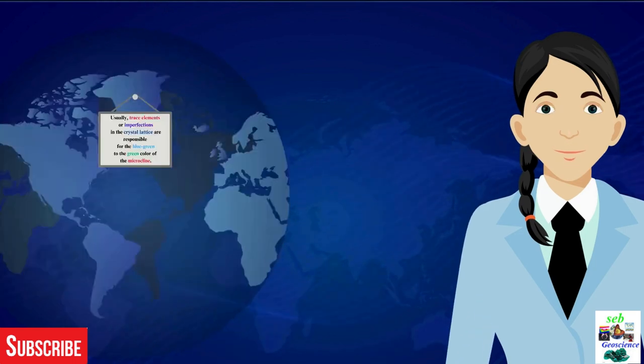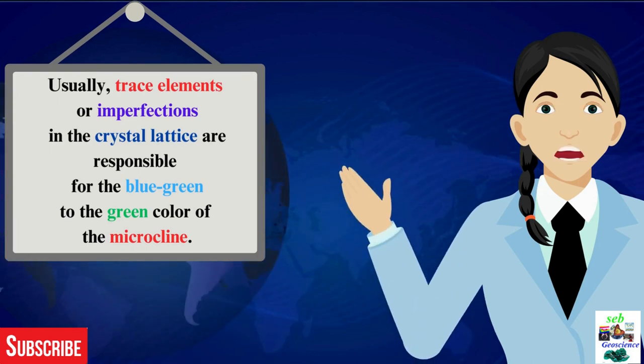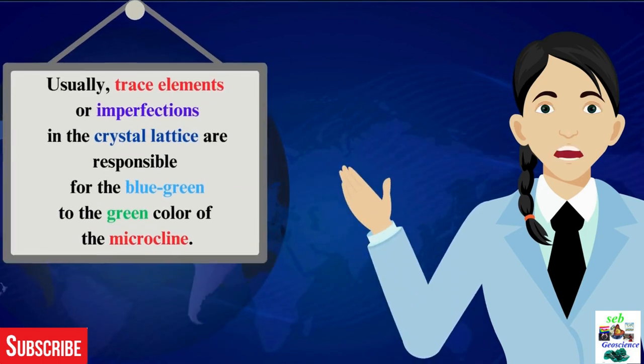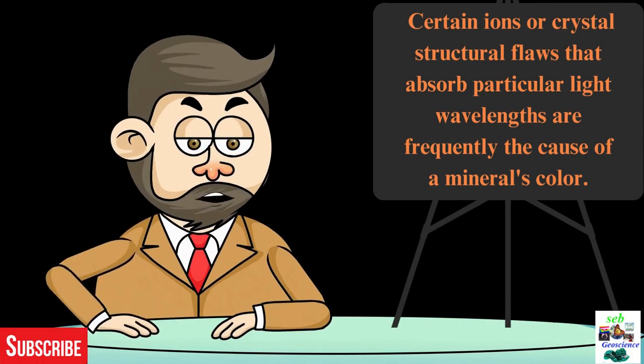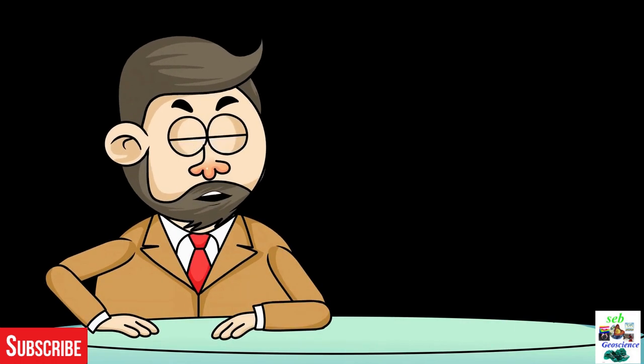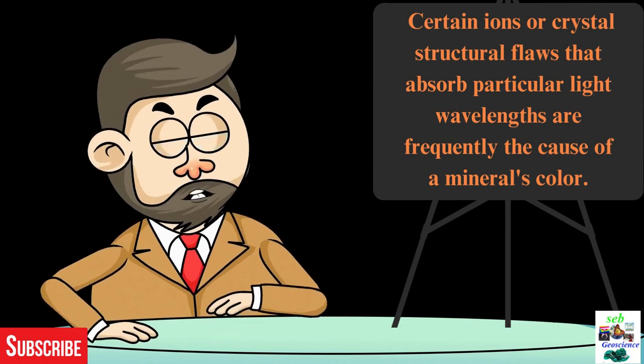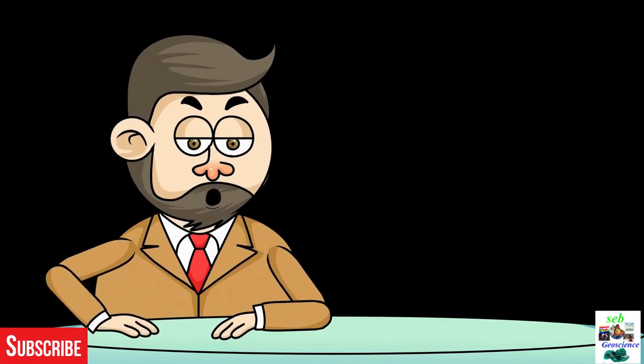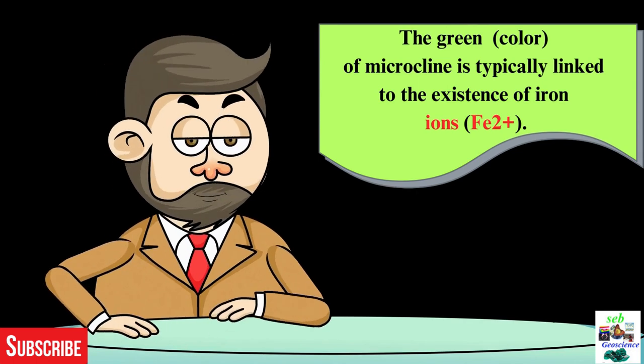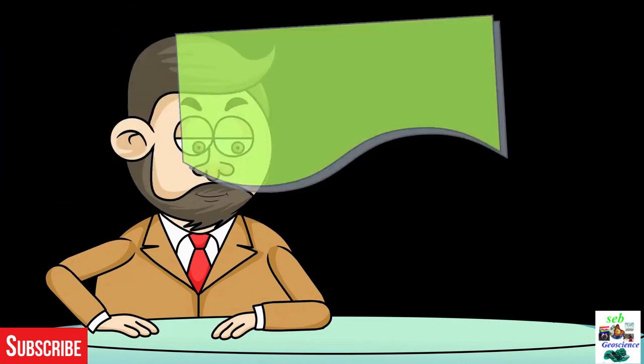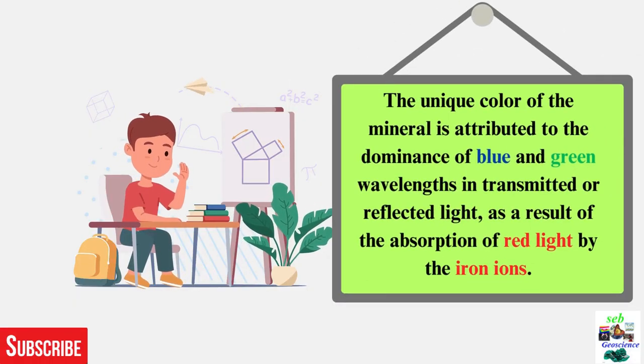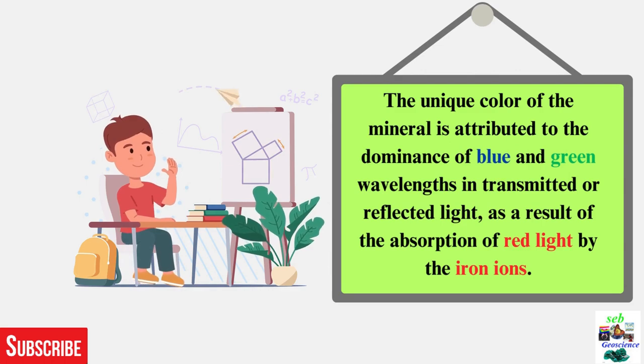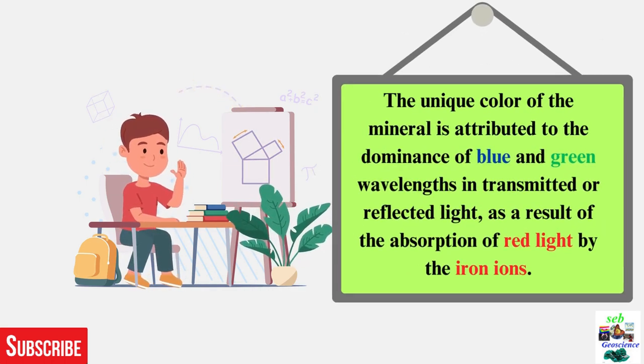The cause for the color becomes blue to green for microcline is trace elements or imperfections in the crystal lattice. Certain ions or crystal structure flaws that absorb particular light wavelengths are frequently the cause of mineral color. The green color of microcline is typically linked to the existence of iron 2+ ions. The color of the mineral is attributed to the dominance of blue and green wavelengths in transmitted or reflected light as a result of absorption of red light by the ions.